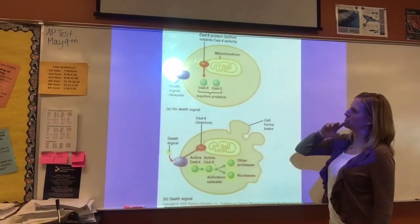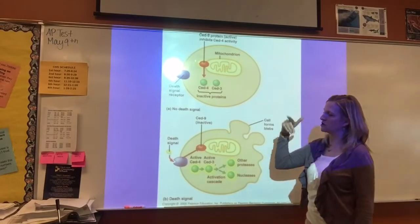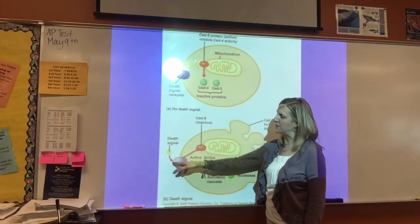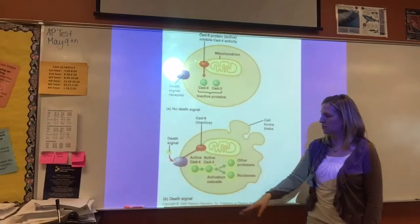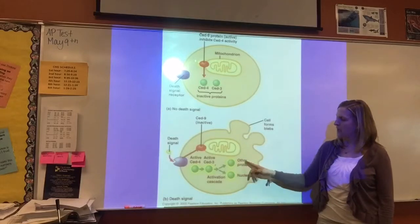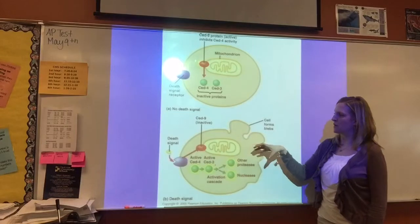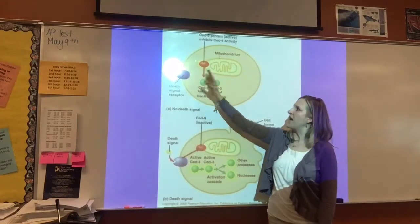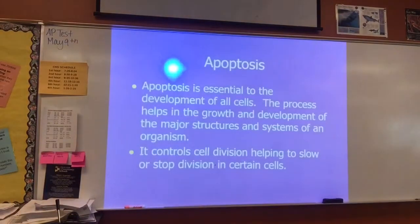This picture shows what triggers apoptosis. Reviewing from Chapter 11: a death ligand — a death signal — binds to a receptor protein, triggering a phosphorylation cascade that ultimately activates enzymes that digest and break down the nucleus, killing the cell. But this doesn't happen when there's no death ligand — it's only triggered when the signal is communicated. So apoptosis is essential for the development of certain cells.